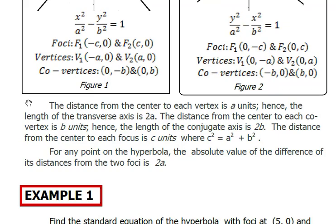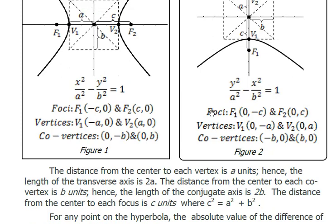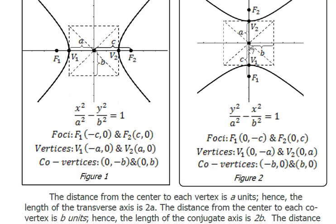The distance from the center to each vertex is a units. From the center going to the right vertex, it's a units, and from the center going to the left vertex, another a units — so the total is 2a. The distance from the center to each co-vertex is b units. In this case, the co-vertex is on the x-axis. From the center going to the co-vertex on the right is b units, and to the co-vertex on the left is another b units, so the length of the conjugate axis is 2b.